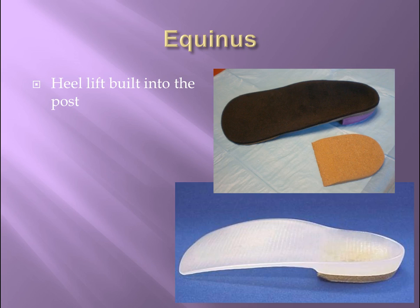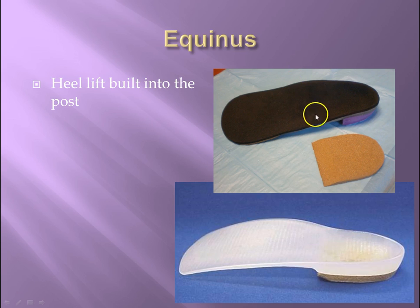Finally, how is equinus addressed, resulting from the talus being tipped backward into the ankle mortis and bottoming out the available ankle joint dorsiflexion? With a heel lift. This can be attached to the rear foot post or unattached beneath the orthotic. I generally start my patients with a quarter inch cork lift not attached to the orthotic. These are pictures here of one of my patients' orthotics with a separate lift, and this is another direct milled orthotic with an integrated cork heel lift.